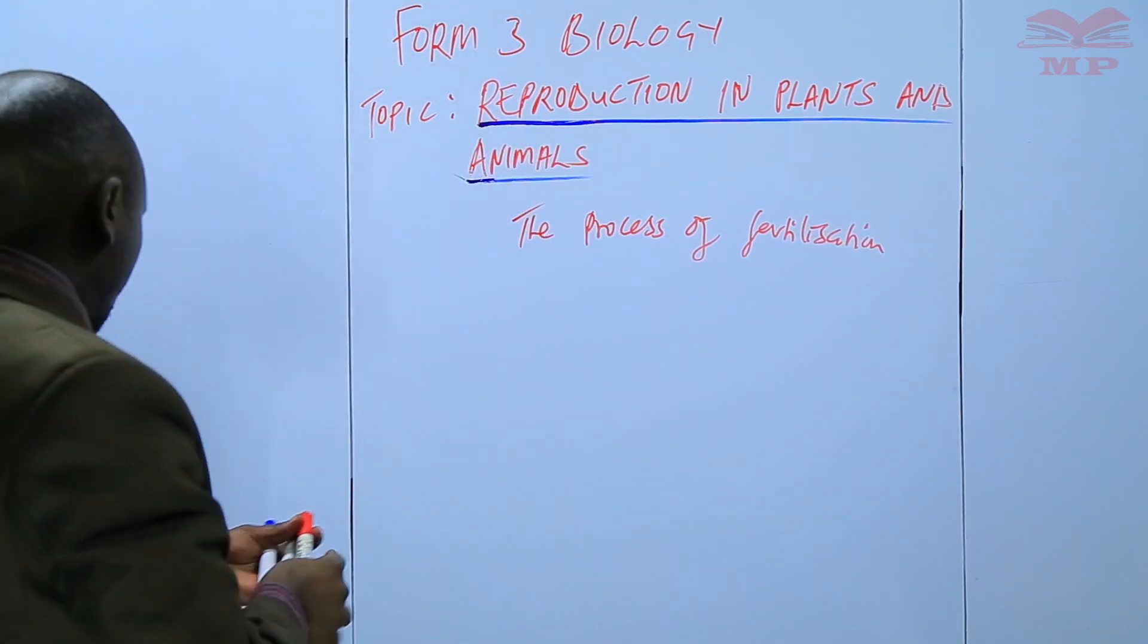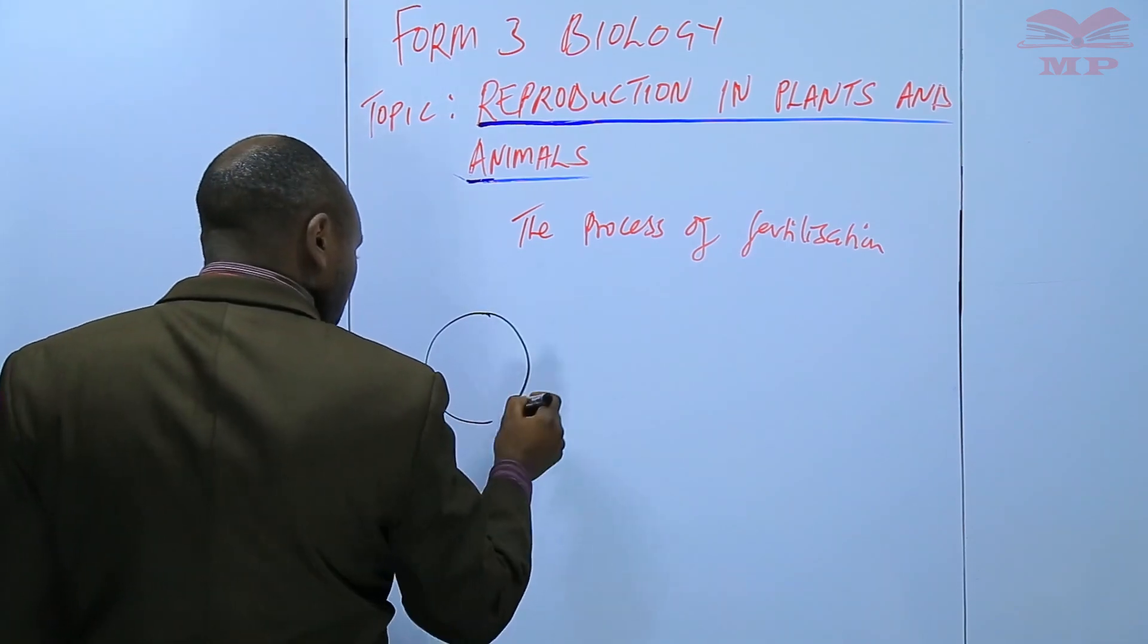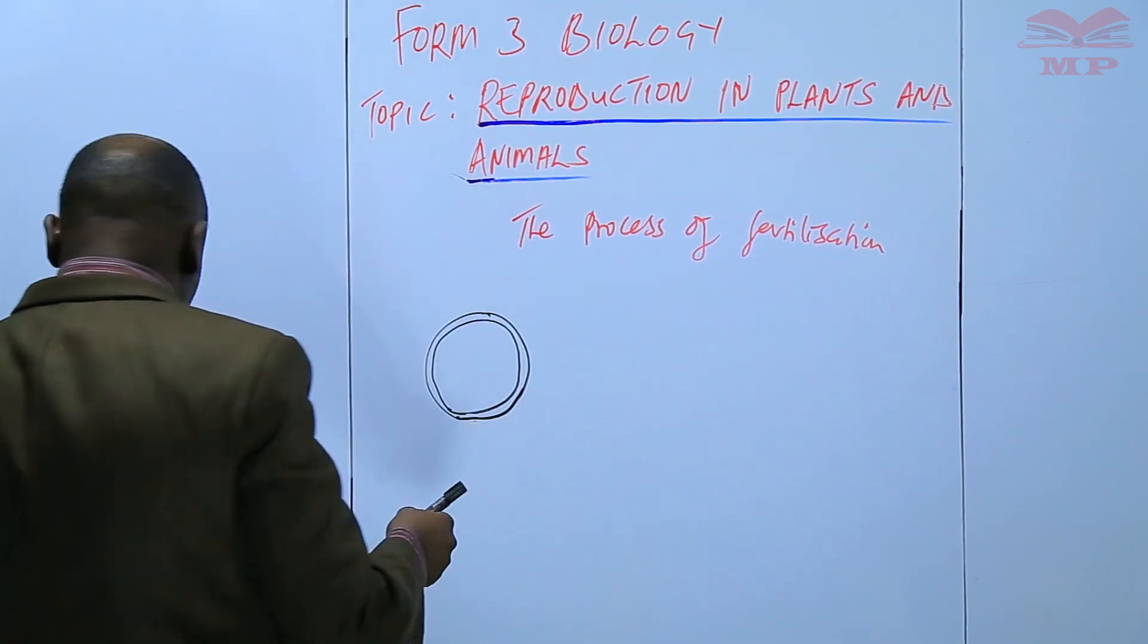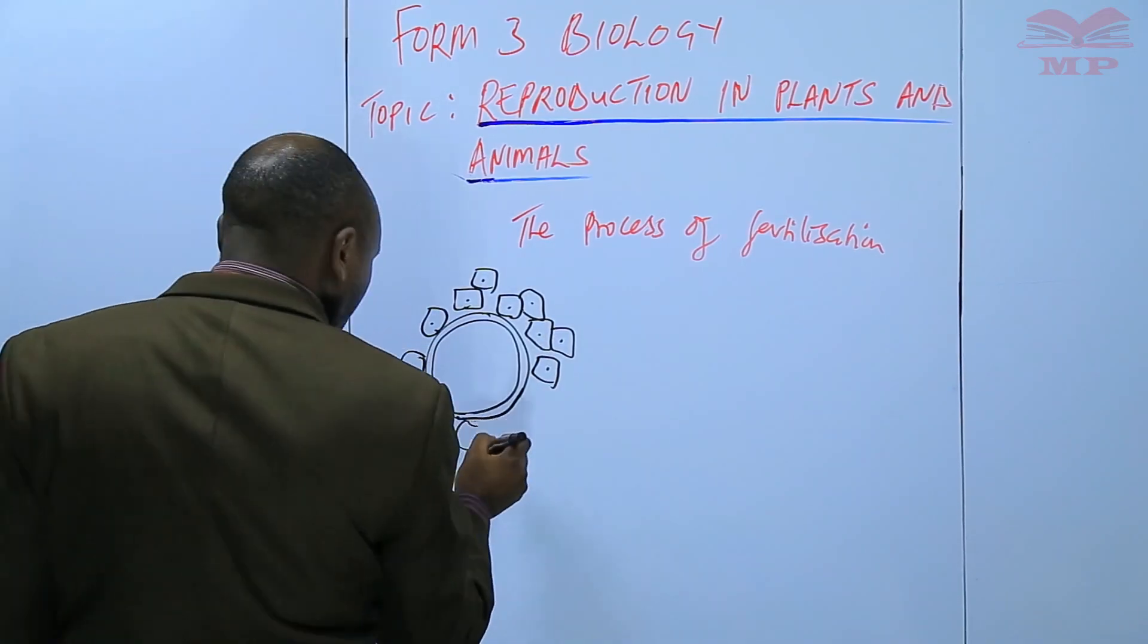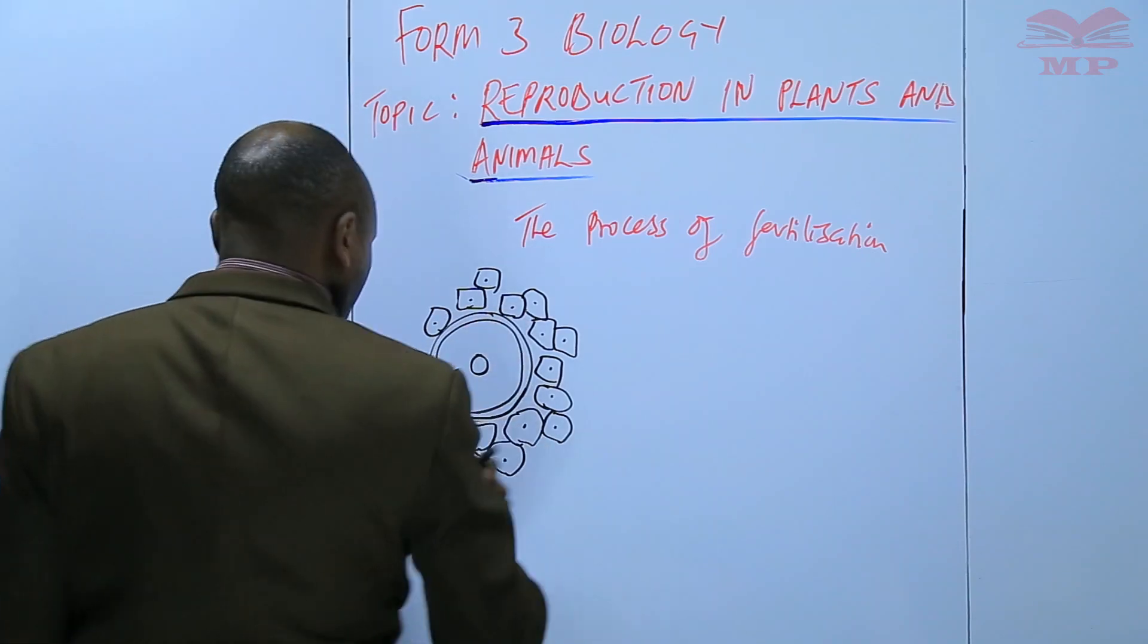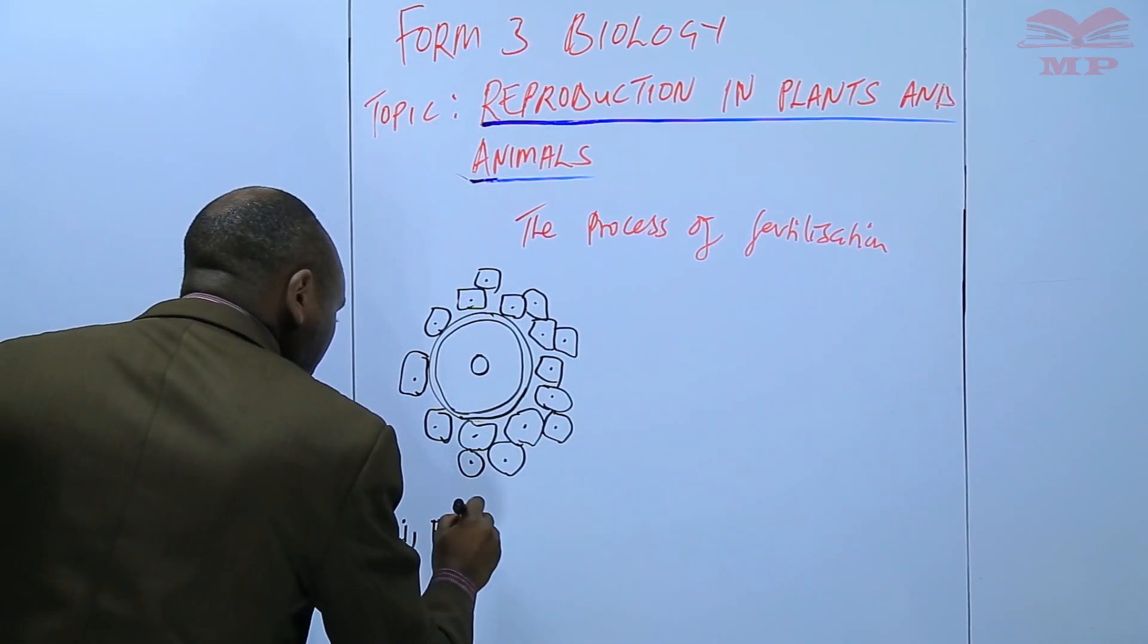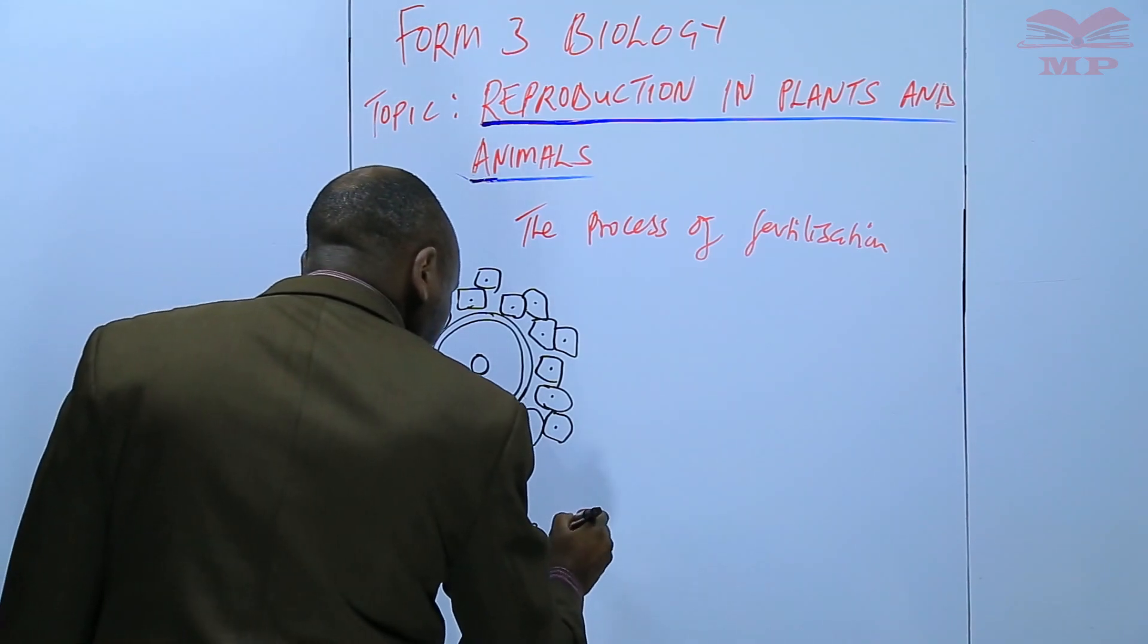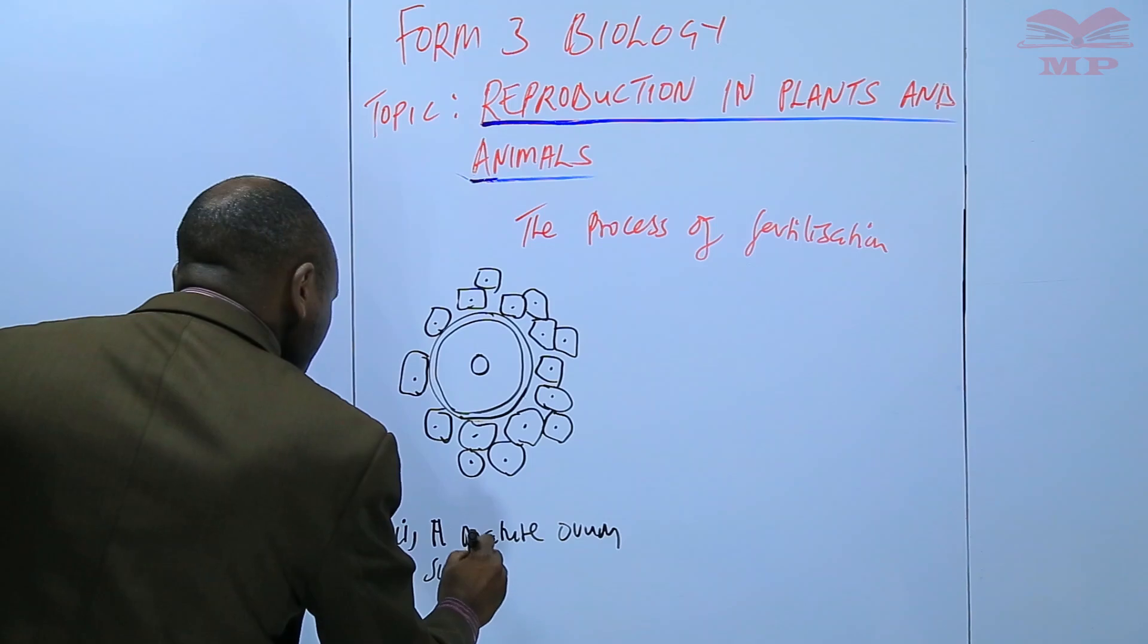We are going to illustrate that in form of a diagram. So, this is a mature ovum surrounded by follicle cells.